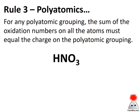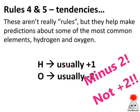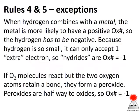To solve that, let's jump ahead to rules four and five. These aren't really strict rules — they're tendencies, observations. Hydrogen is almost always plus one, and oxygen is almost always minus two. Those are useful defaults: if you've got a large formula and have to make a guess, assume hydrogen is plus one unless it's an H2 molecule, and assume oxygen is minus two unless it's an O2 molecule.